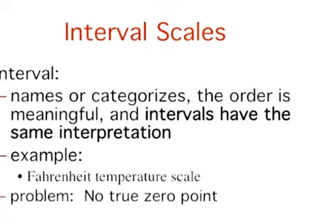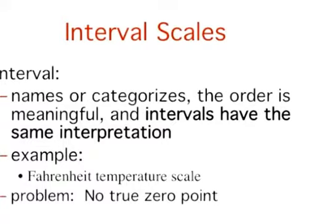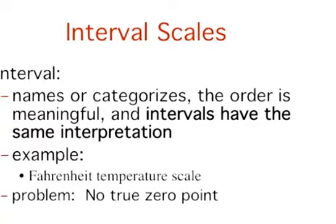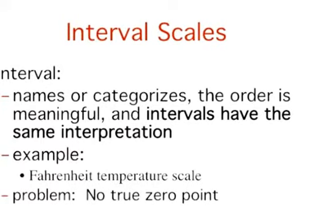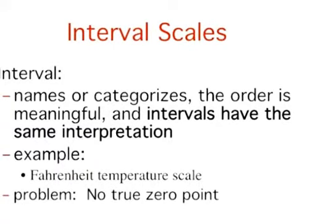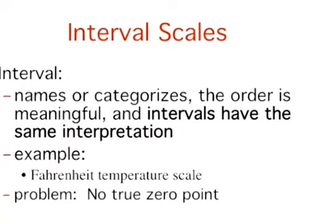The next highest scale of measurement is the interval scale. As you probably noticed, each successive scale builds upon the qualities of the lower scales, adding additional information. Interval scales are numerical scales in which intervals have the same interpretation throughout. So, the interval scale names or categorizes, the order is meaningful, and the intervals are equal. As an example, consider the Fahrenheit scale of temperature. The difference between 30 degrees and 40 degrees represents the same temperature difference as the difference between 80 degrees and 90 degrees. This is because each 10 degree interval has the same physical meaning in terms of the kinetic energy of molecules.